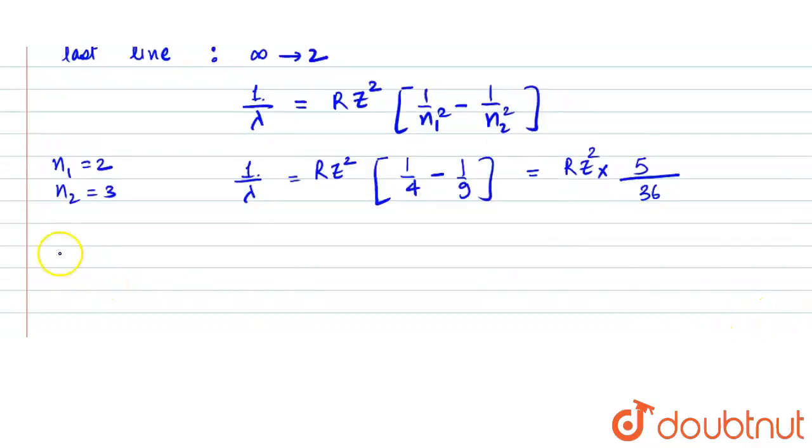For the second line of Balmer series, in which transition is happening from n=4 to n=2, that means n₁ is 2 and n₂ is 4.